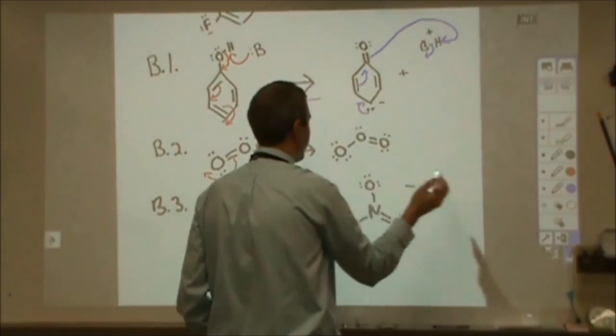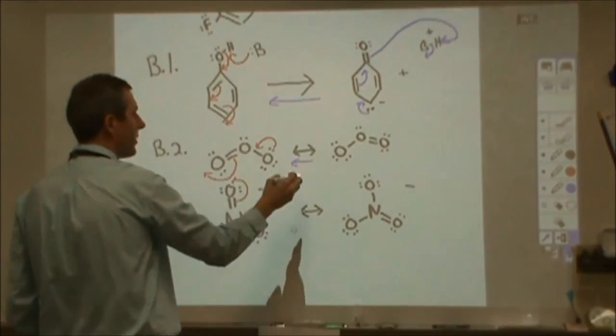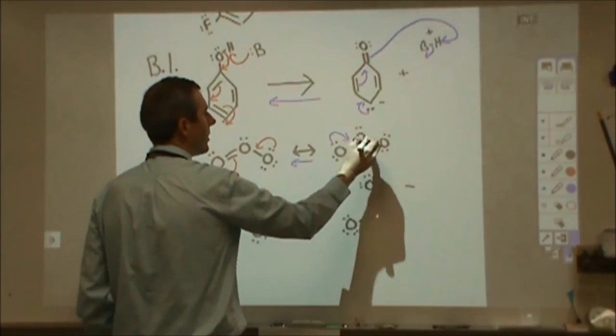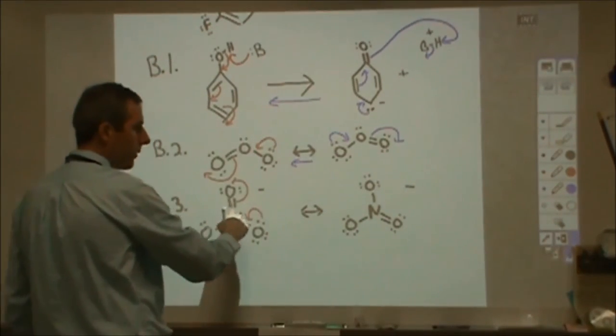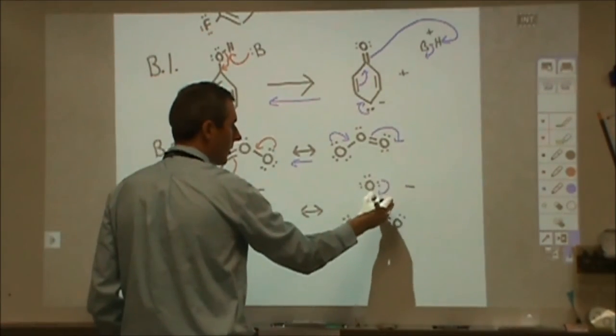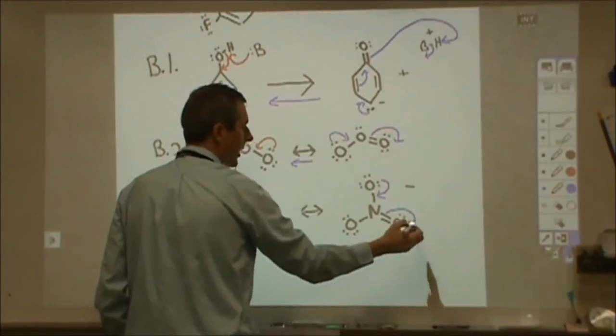If we wanted to do them in reverse, we'd want to go backwards here. We'd take two electrons down to here, two electrons out to there. And if I wanted to reform a double bond here, I'd kick two electrons down there, and then kick this double bond back out.